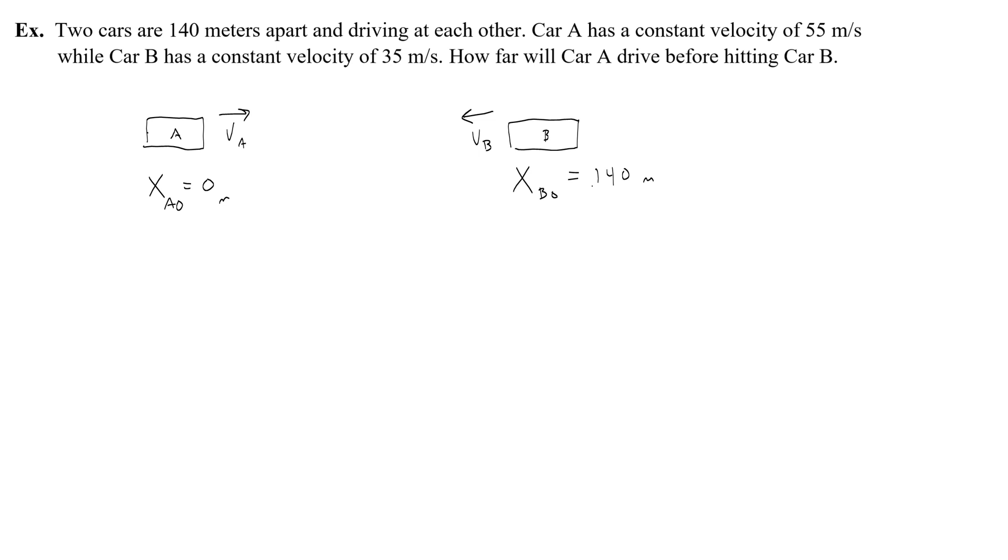Let's say that car A's initial position is 0, and car B's initial position, xB0, is 140. Now that's a positive 140, because it's to the right. And you could swap this. You could say that B is at 0. That would make A at negative 140, but that might be a little confusing. And let me go ahead and write the average velocity of each. Now this is where things are going to be a little tricky.